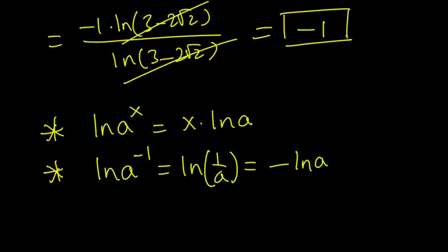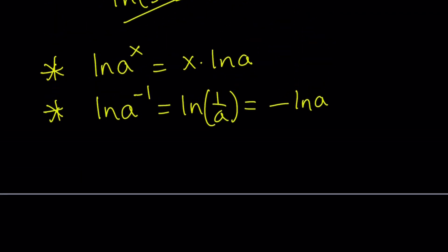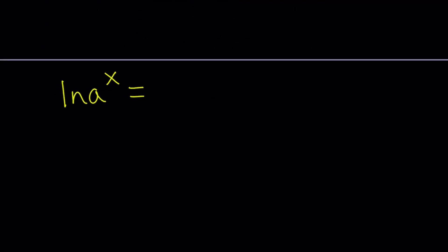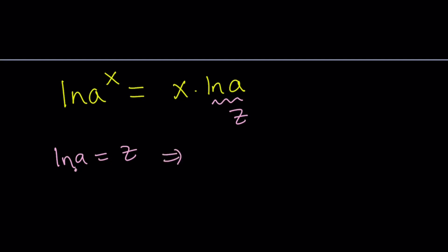Now let's prove the first property — the second one is just a special case. How can we prove that ln(a to the power x) equals x times ln(a)? We're going to use substitution. Let's set ln(a) equal to z. By the definition of logs, since this is base e, this implies a equals e to the power z.